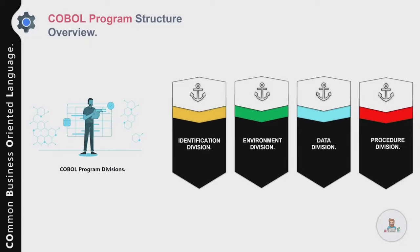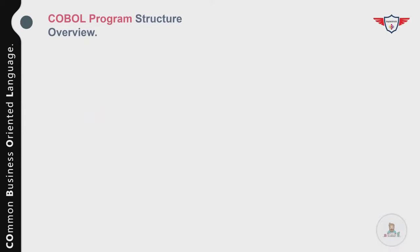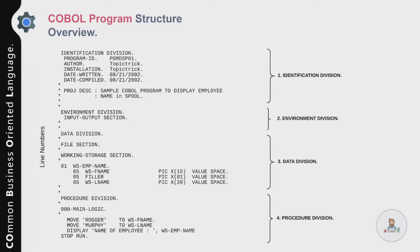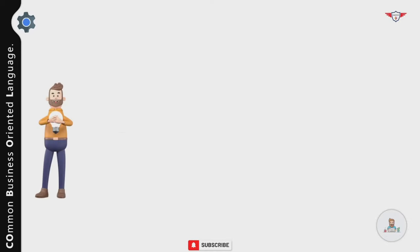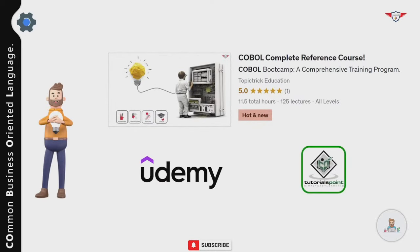The last division is the Procedure Division, which contains the business logic — the instructions necessary to read input, process it, and create output. Here is a sample COBOL program divided into all four divisions: Identification Division, Environment Division, Data Division, and Procedure Division. This is how you structure your COBOL program. For further detail on sections and subsections, check out our course on Udemy or Tutorial Point.